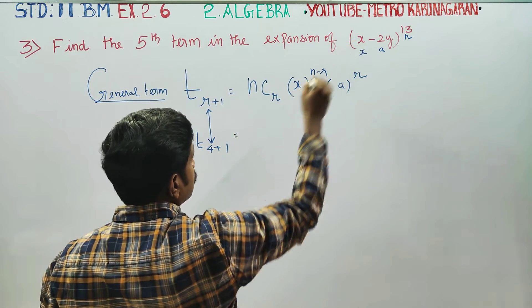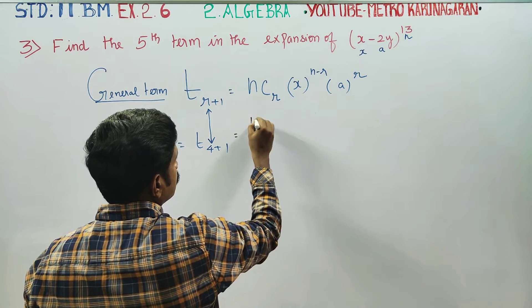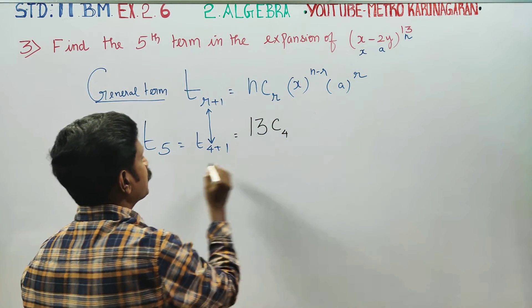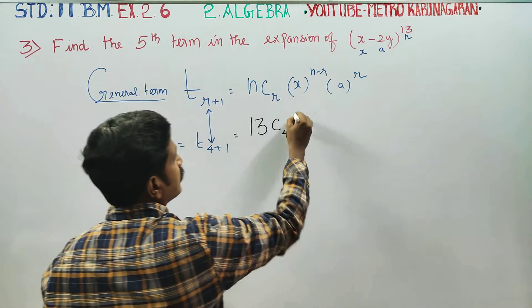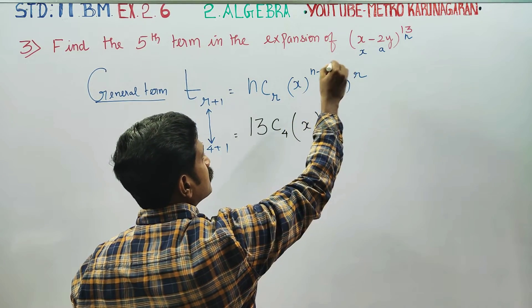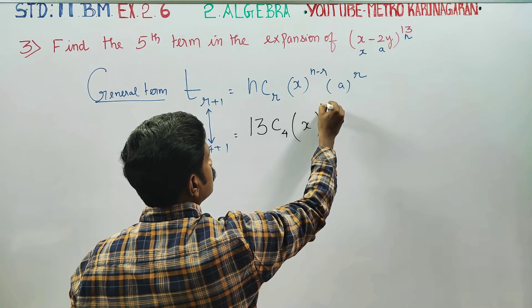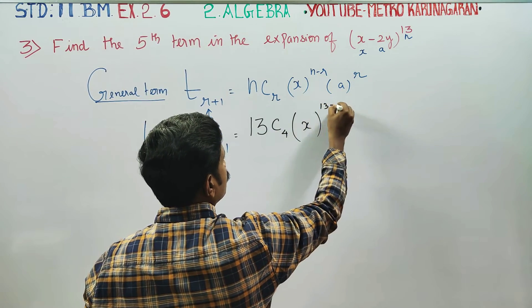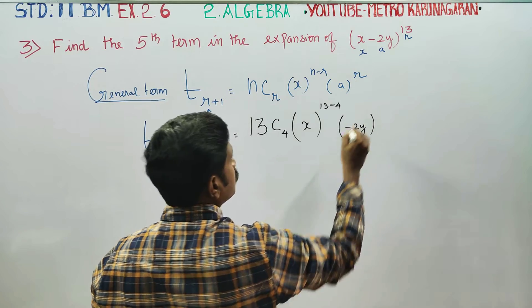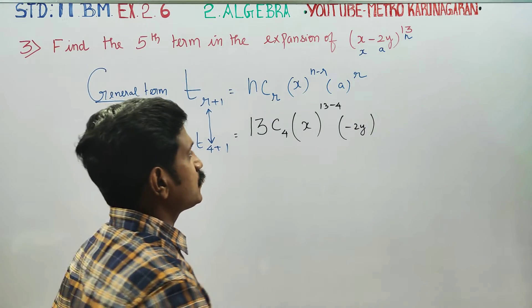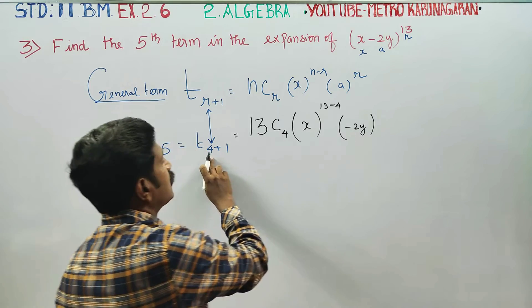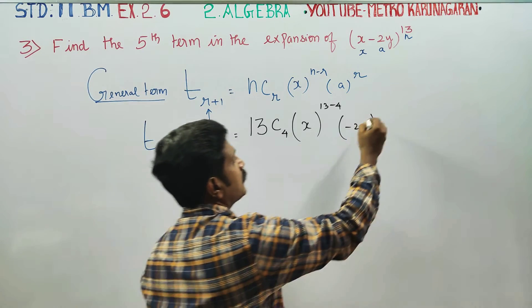What is my N? Look up there — N is 13. So we have 13C4. R is 4, so we do not put 5, we put 4. X is the first term, so X to the power N minus R, which is 13 minus 4. A is the second term, which is minus 2Y, raised to power R, which is power 4.